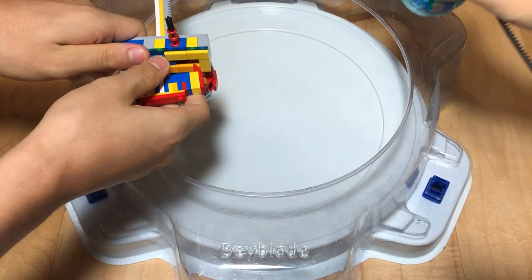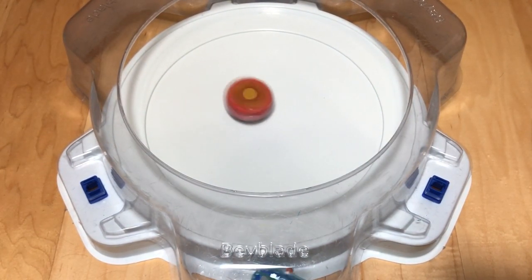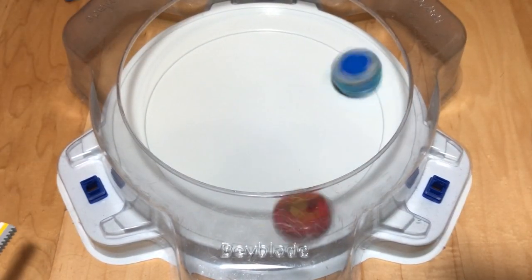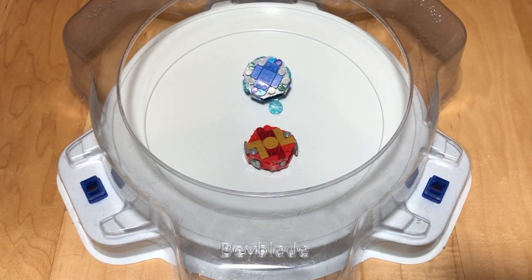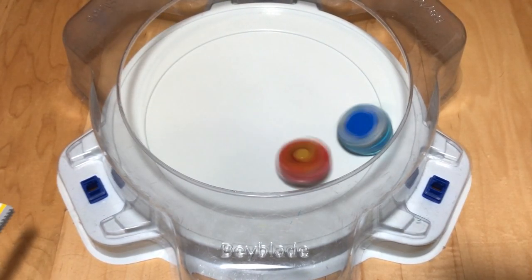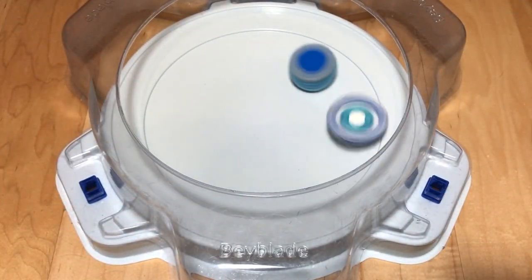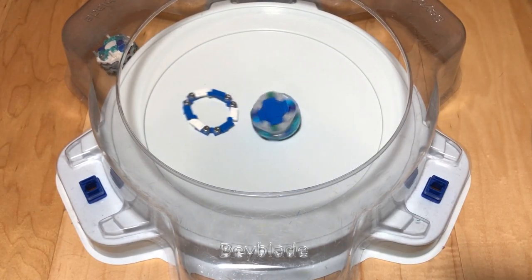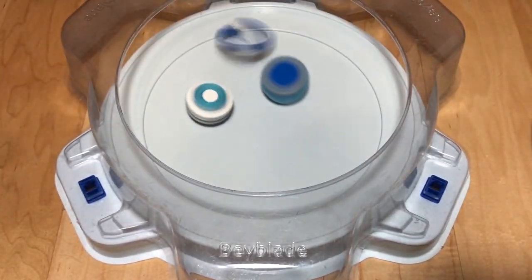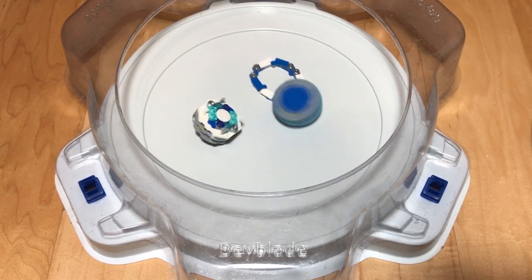Longinus versus Aegis Dash. Three, two, one, let it rip. Three, two, one, let it rip. Three, two, one, let it rip. Again! Three, two, one, let it rip. Come on! Phoenix versus Aegis Dash. Three, two, one, let it rip. That was pretty unexpected. Three, two, one, let it rip. Oh, there goes the armor.